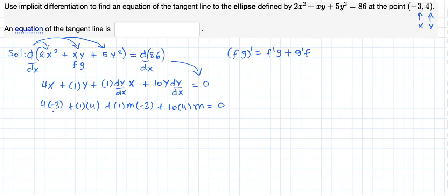4 times negative 3 is negative 12, plus 4. That's negative 8. Negative 3m plus 40m, that's just 37m, and that equals 0.